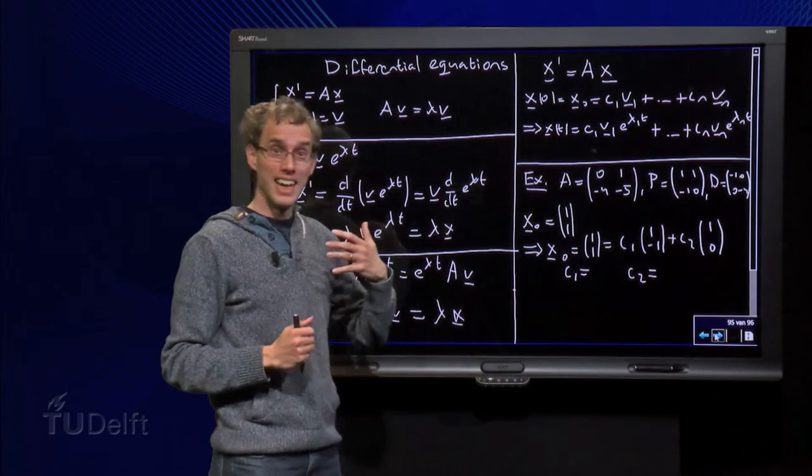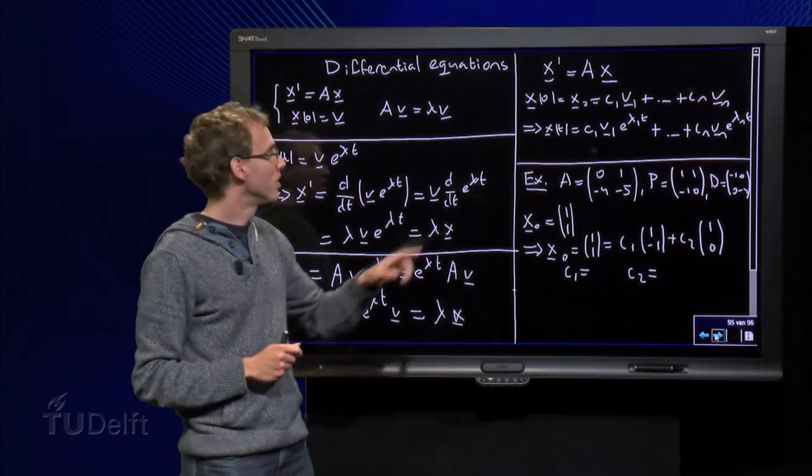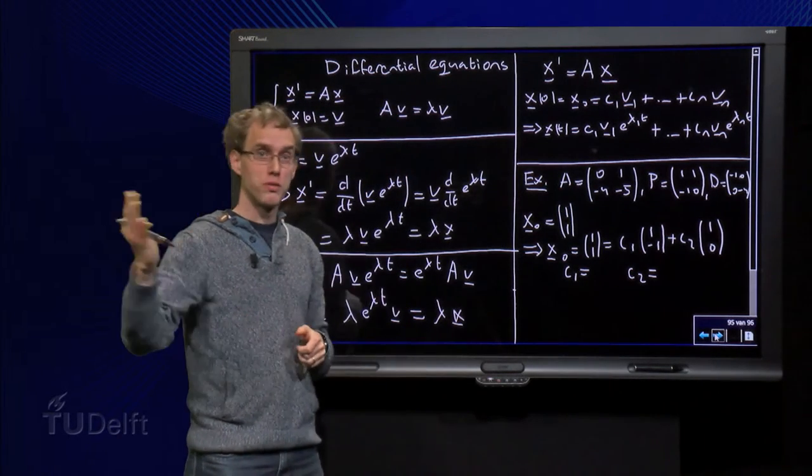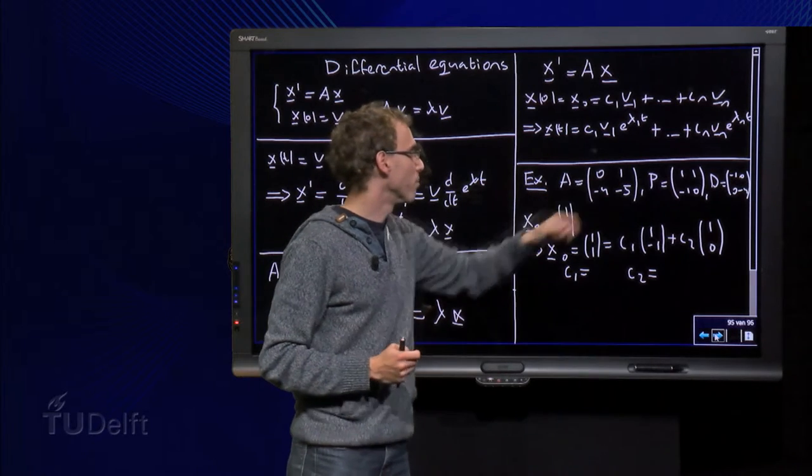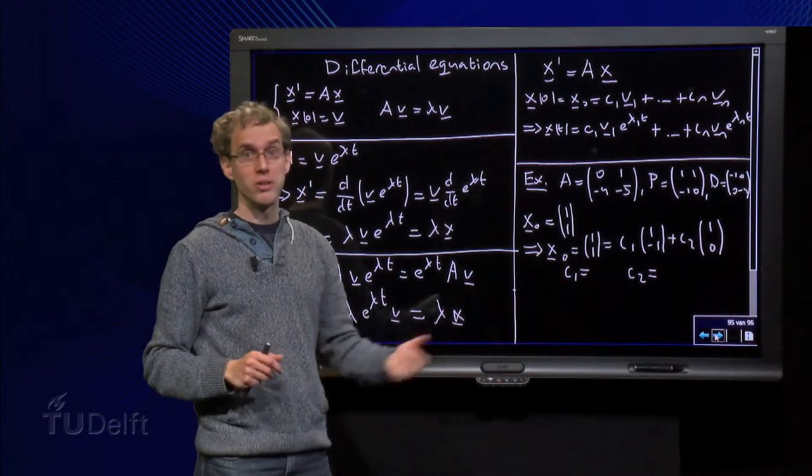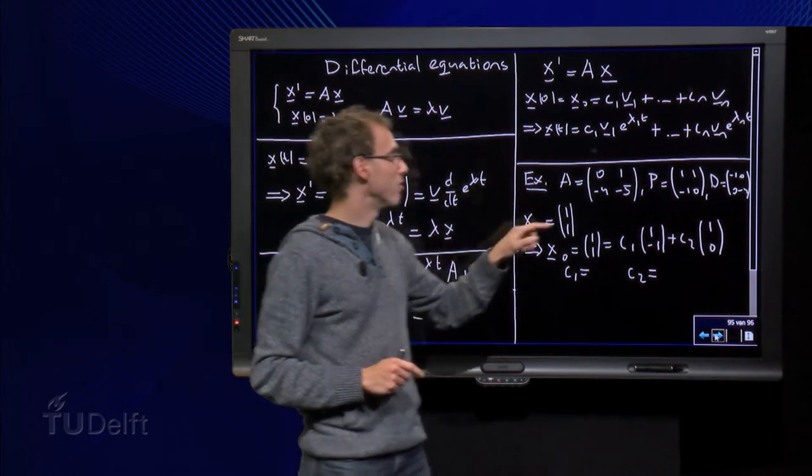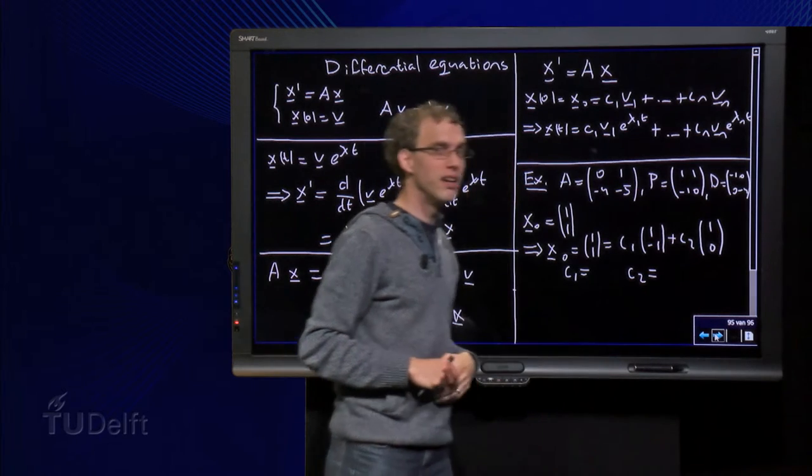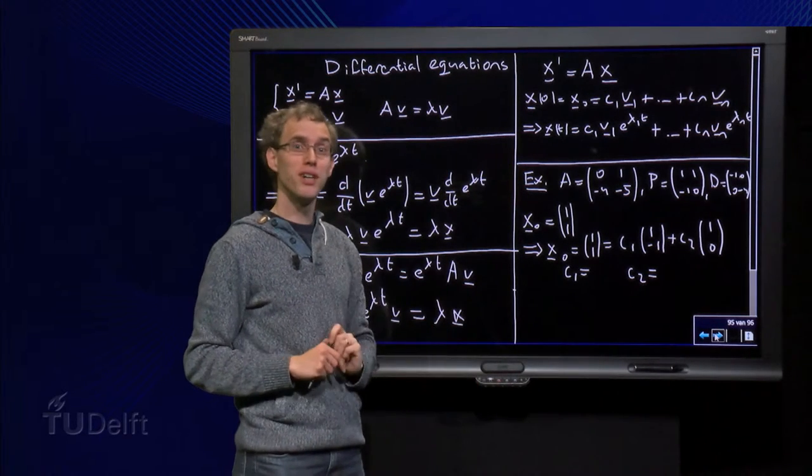So let's see an explicit example how this works. So we have our A from our mass spring system, 0, 1, minus 4, minus 5. We know how to diagonalize A, A equals PDP inverse with P and D given. You have already checked that in the previous video.